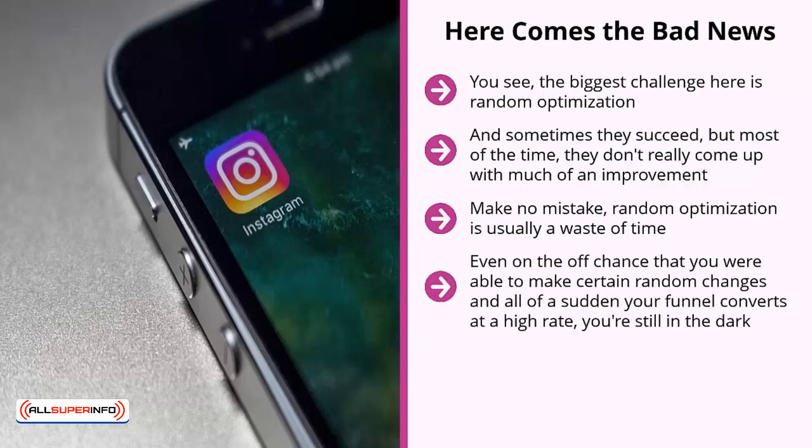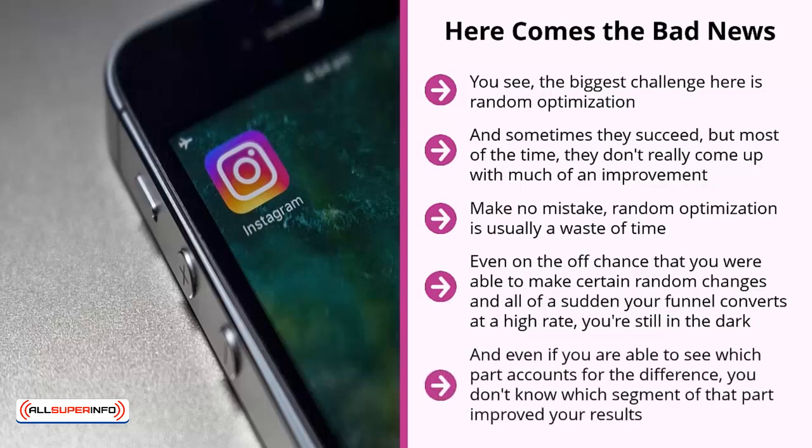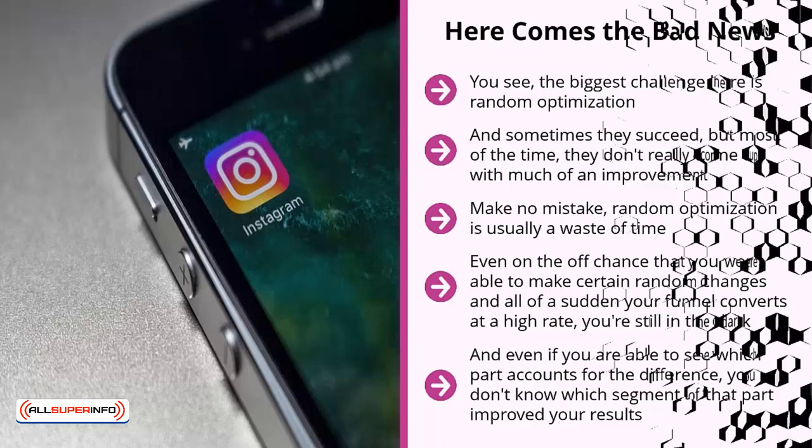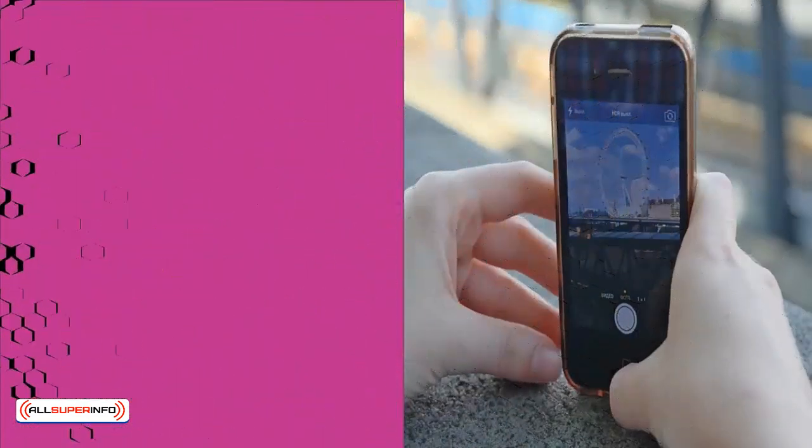Even on the off chance that you were able to make certain random changes and all of a sudden your funnel converts at a higher rate, you're still in the dark. You don't know which part of your funnel accounts for the improvement. And even if you are able to see which parts account for the difference, you don't know which segment of that part improved your results. Do you see how this works? Do you see why this is so confusing and so frustrating?